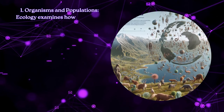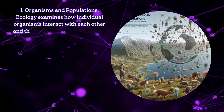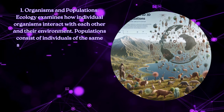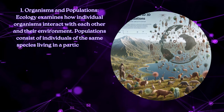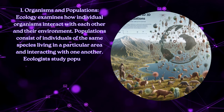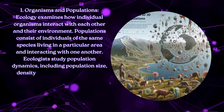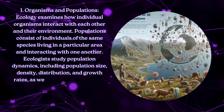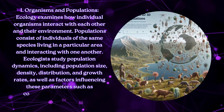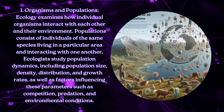Organisms and Populations: Ecology examines how individual organisms interact with each other and their environment. Populations consist of individuals of the same species living in a particular area and interacting with one another. Ecologists study population dynamics, including population size, density, distribution, and growth rates, as well as factors influencing these parameters, such as competition, predation, and environmental conditions.